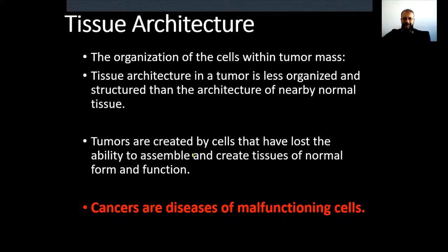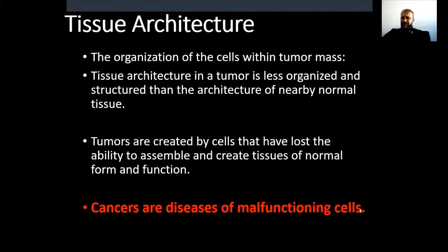Normal cells assemble to create tissue according to a plan — they divide according to a plan and then stop dividing. After a certain point, normal cells stop dividing. Cancers are diseases of malfunctioning cells because they have lost the ability of cell cycle control.